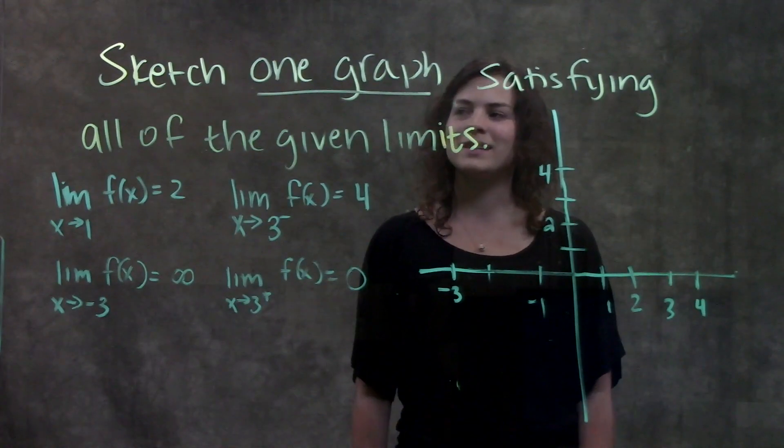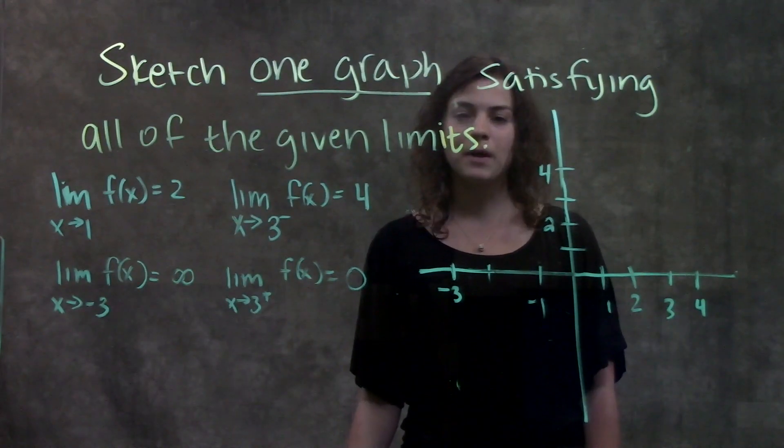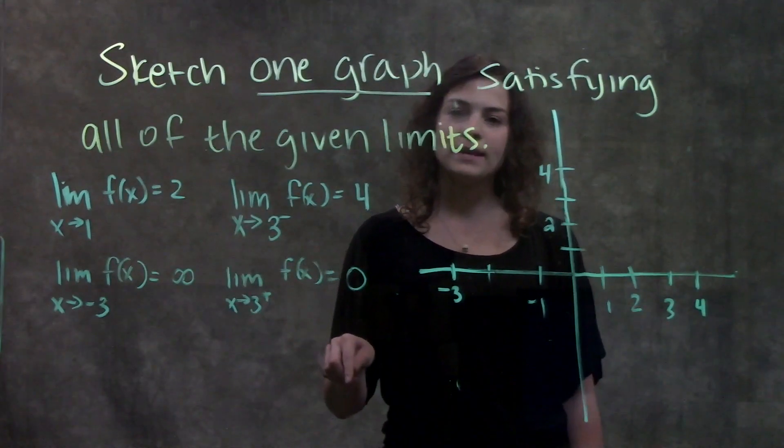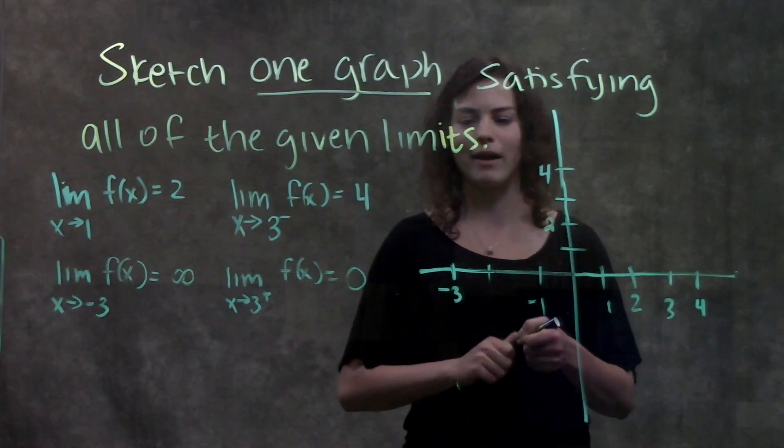This question asks us to sketch one graph that satisfies all of these given limits. The way we approach these types of problems is we go through each limit, step by step, put them on our graph, and then we're just going to connect everything all at the end and have one big graph.